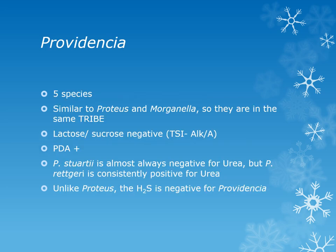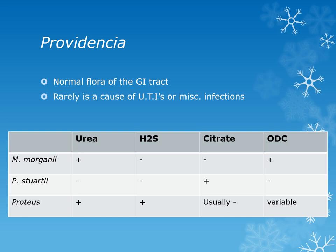There are five species of Providencia, in the same tribe as Proteus and Morganella. They are lactose and sucrose negative, so TSI is alkaline over acid. They are phenylalanine deaminase positive. Providencia stuartii is almost always urea negative, but Providencia rettgeri is consistently urea positive. Unlike Proteus, H2S is negative for Providencia. The organisms that are H2S positive are Salmonella, Citrobacter, and Proteus. Providencia is normal flora of the gut and occasionally causes UTIs or miscellaneous infections as an opportunistic organism.